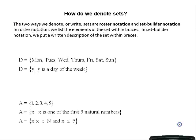How do we denote sets? There are two ways we denote or write sets: roster notation and set builder notation. In roster notation we list the individual elements of the set within braces. In set builder notation we put a written description of the set within braces.